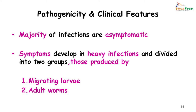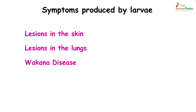Coming to pathogenicity and clinical features, the majority of infections are asymptomatic. However, in patients with heavy infections there can be symptoms due to the migrating larva or the adult worm. Since the adult worms are very tiny, they cannot cause obstruction. Symptoms produced by the larva include lesions in the skin, lesions in the lung, and Wakana disease, which is caused by Ankylostoma duodenale larvae that are ingested.